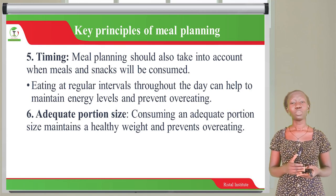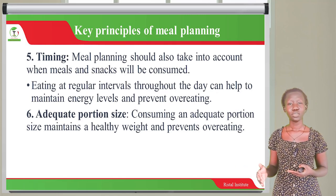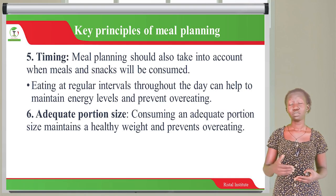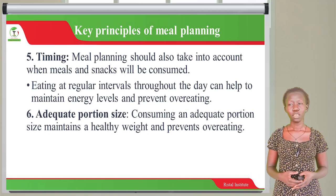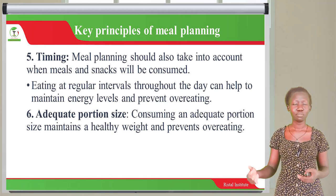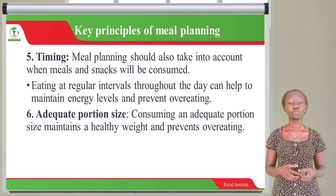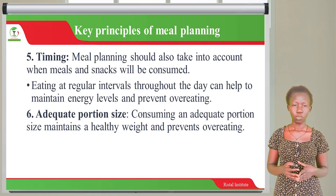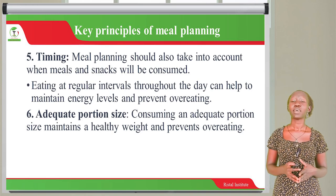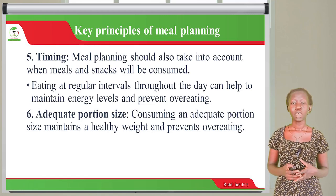We also have timing. When planning a meal, take into account when the meals and snacks will be consumed. If a food is going to be consumed on Wednesday, you cannot prepare it on Monday, because that will cause storage problems and it may go bad. If you are preparing a meal for supper, start planning early so that by evening time you are ready to prepare and eat. Eating at regular intervals throughout the day can help maintain energy levels and prevent overeating. The next principle is adequate portion size — ensuring that an adequate portion size is maintained helps maintain a healthy weight and prevents overeating.